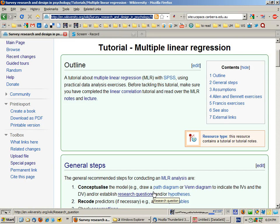Welcome to tutorial 4 for survey research and design in psychology. This tutorial is about multiple linear regression, and the structure for the tutorial is that we'll go over the general steps involved, review the assumptions for multiple linear regression.